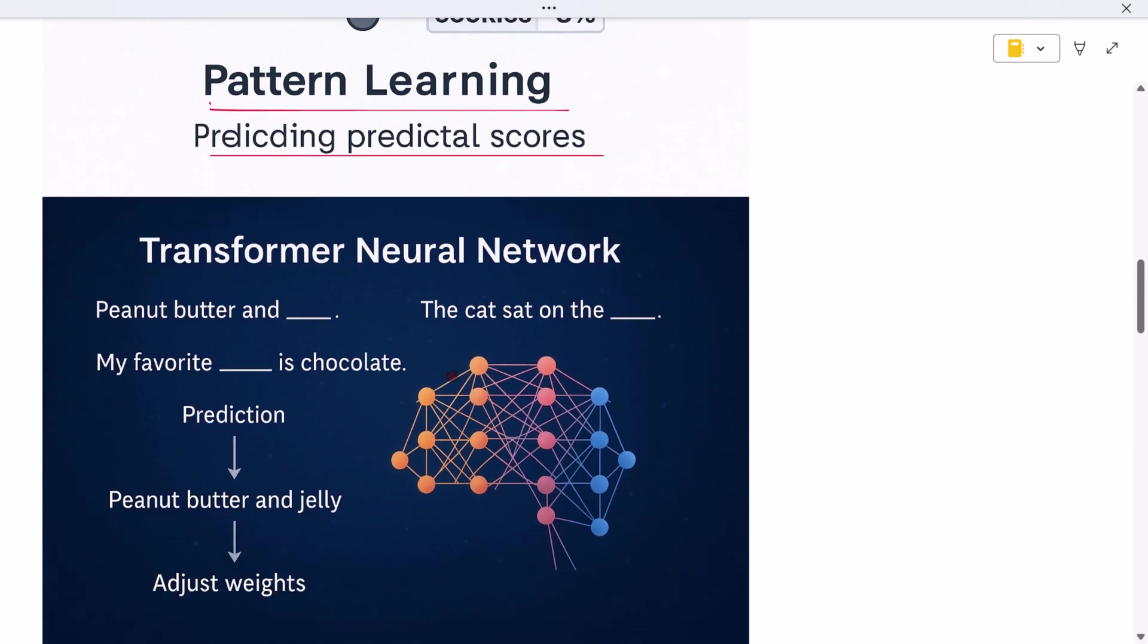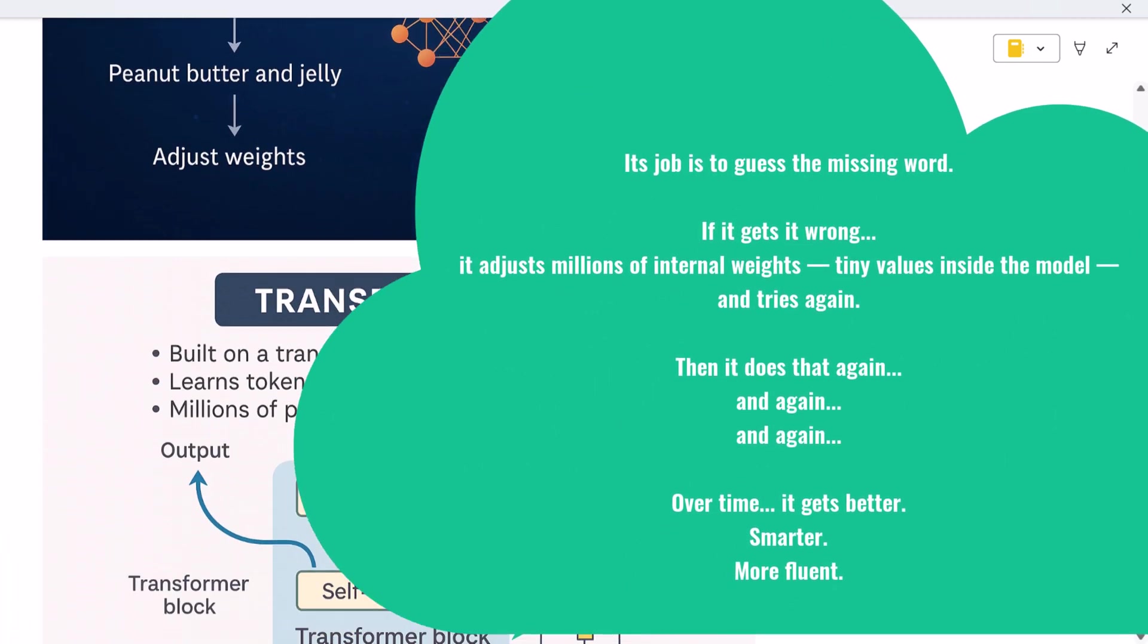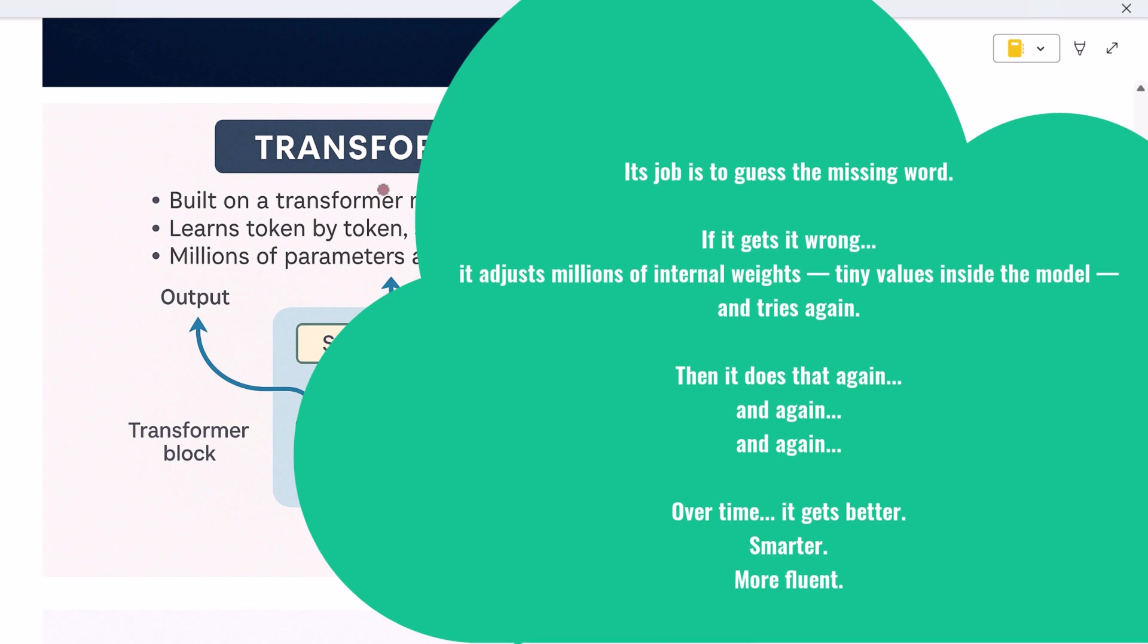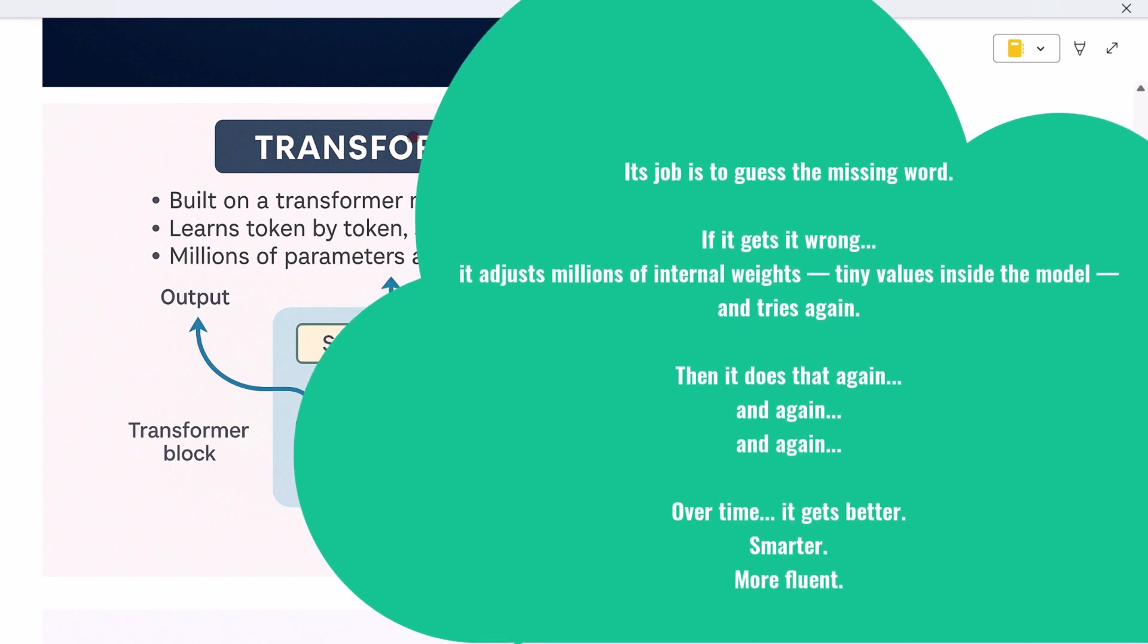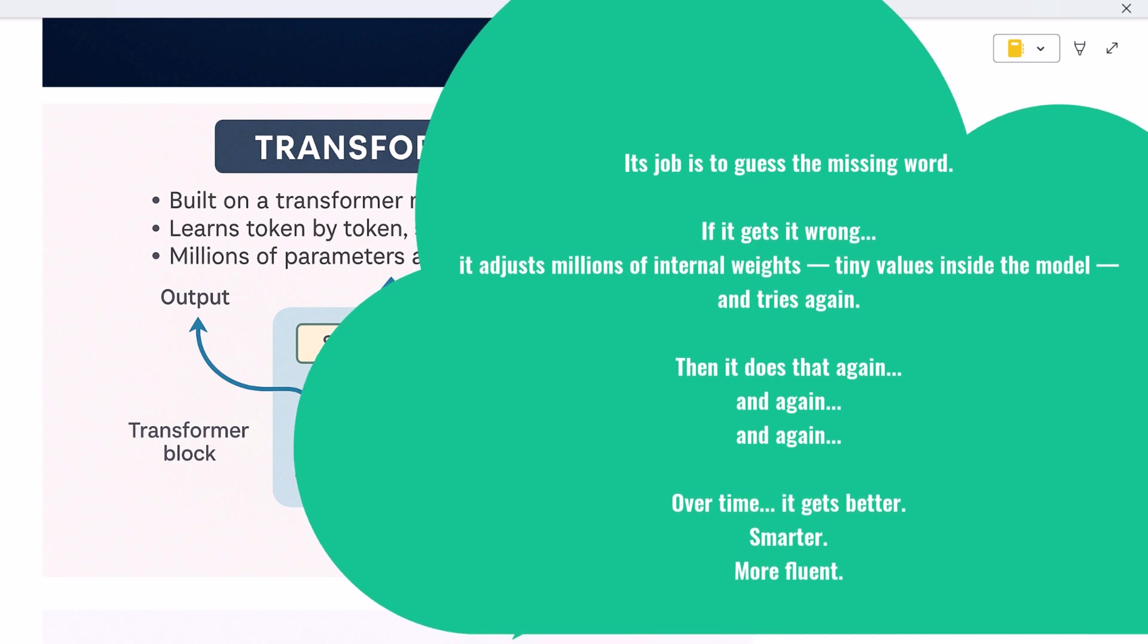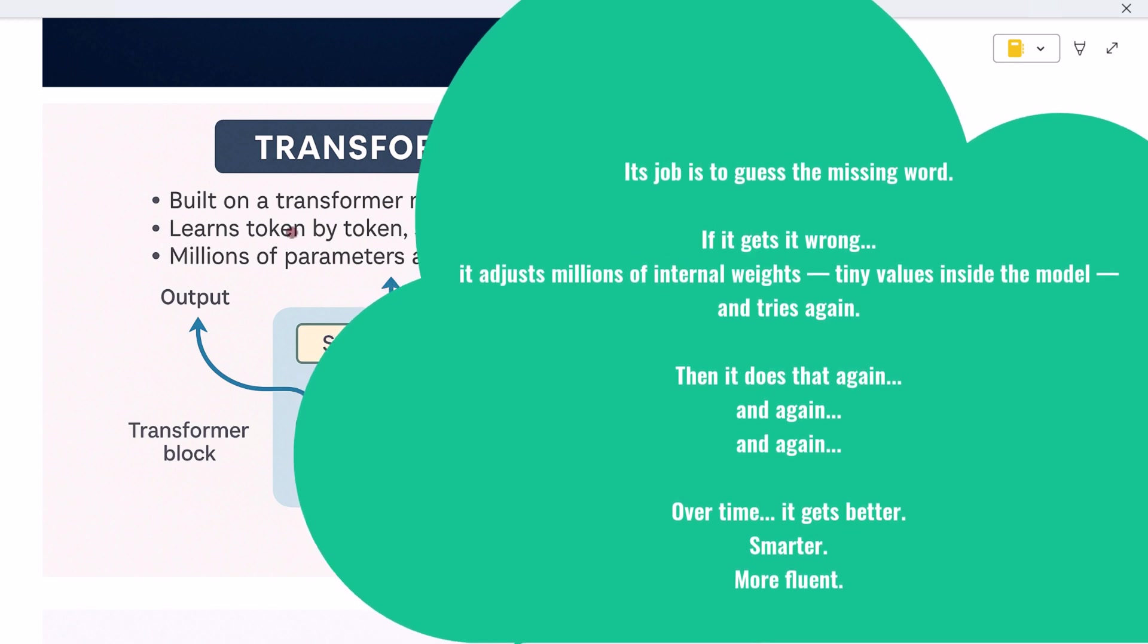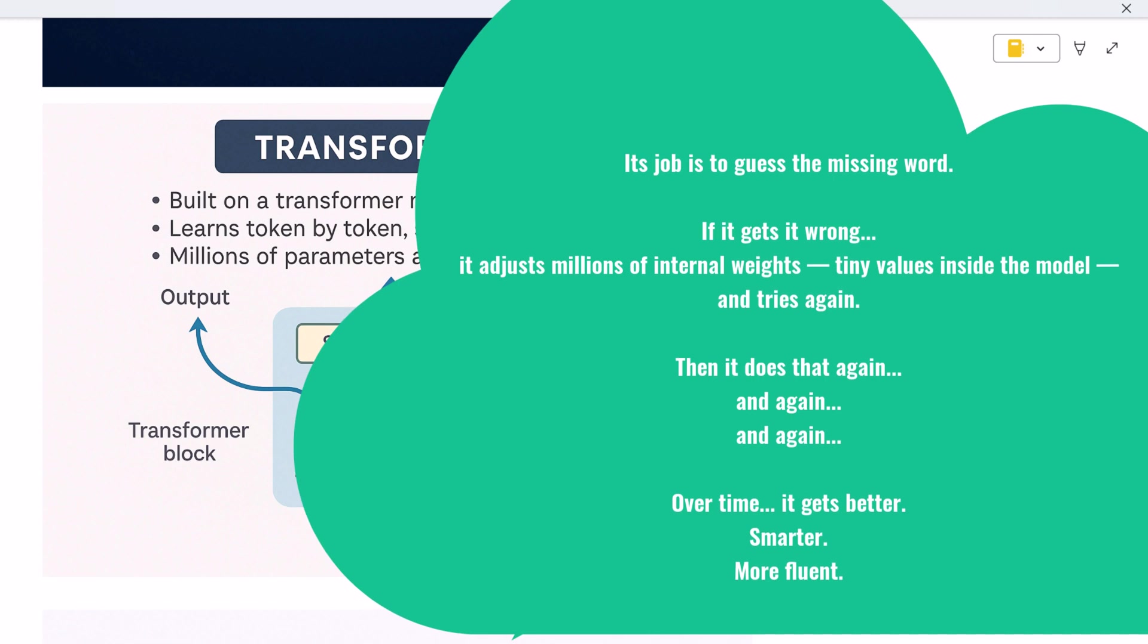Great question. The model is built on something called a transformer, a special kind of deep learning neural network. During training, it's shown part of a sentence with a word or two hidden. Its job is to guess the missing word. If it gets it wrong, it adjusts millions of internal weights, tiny values inside the model, and tries again.